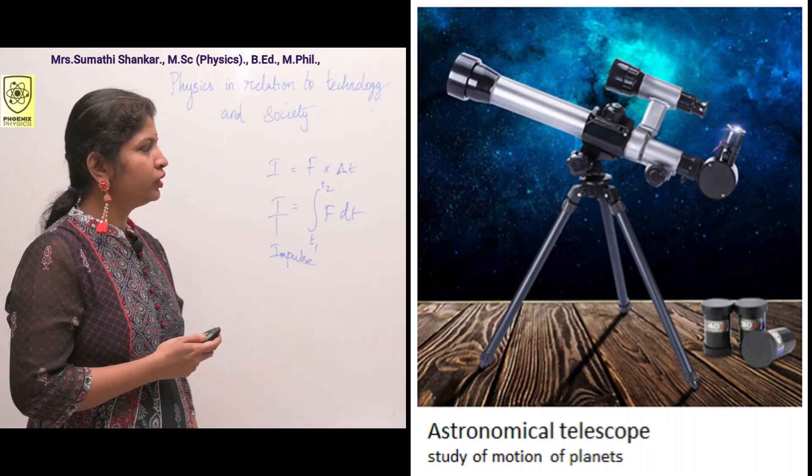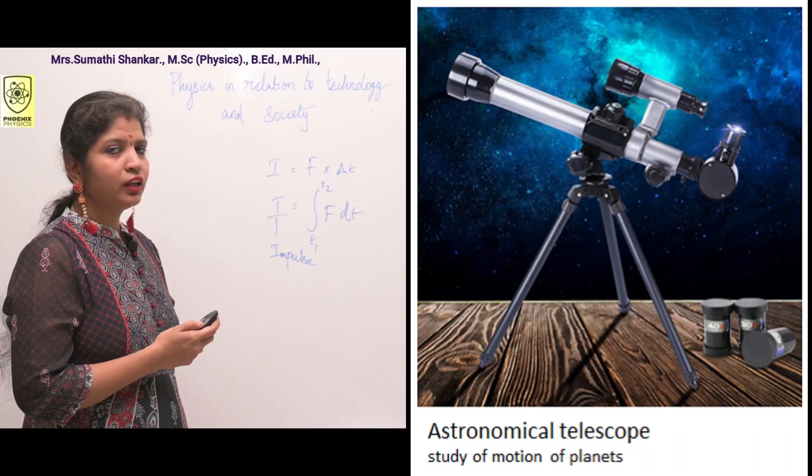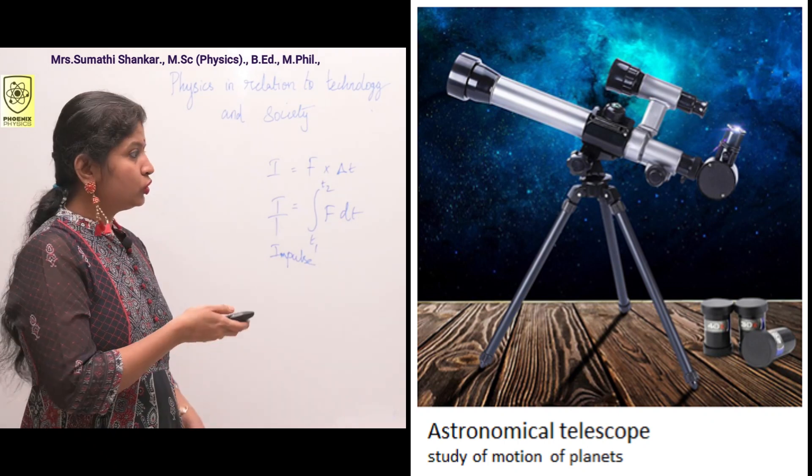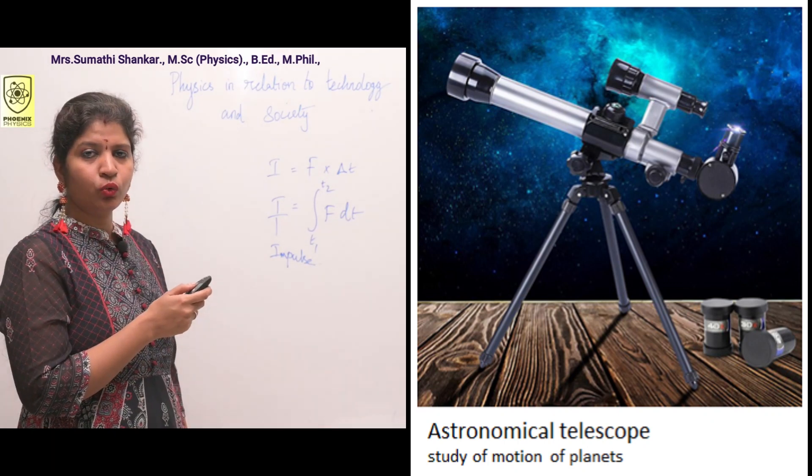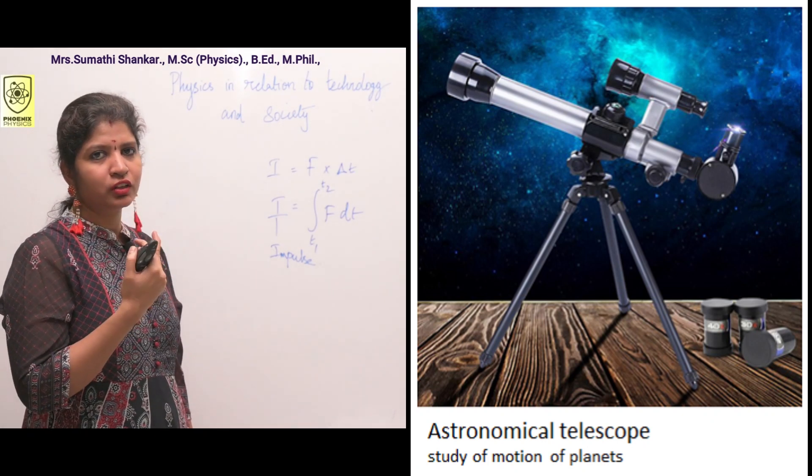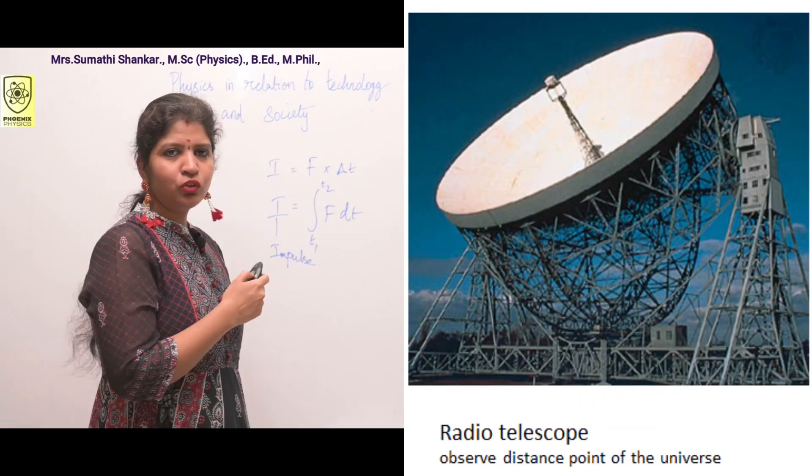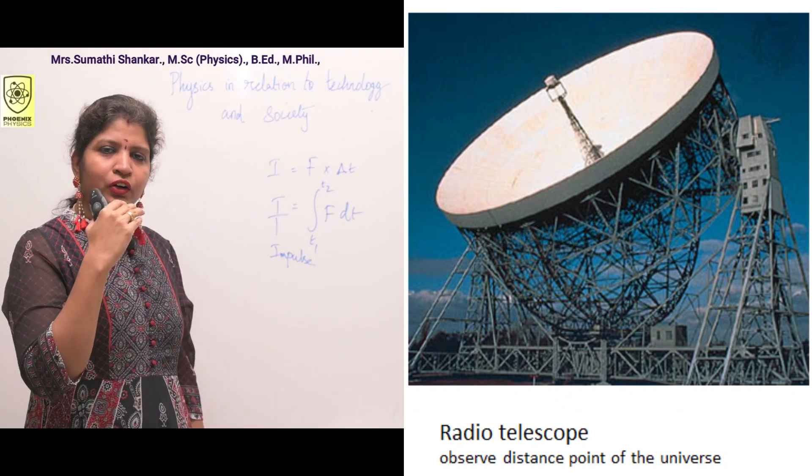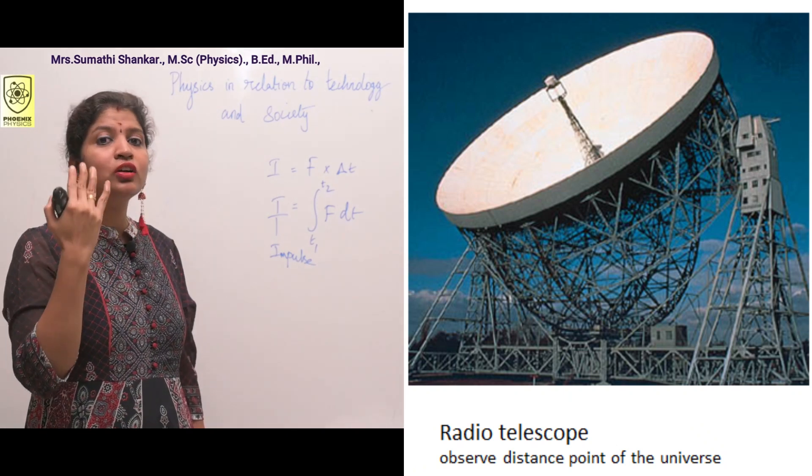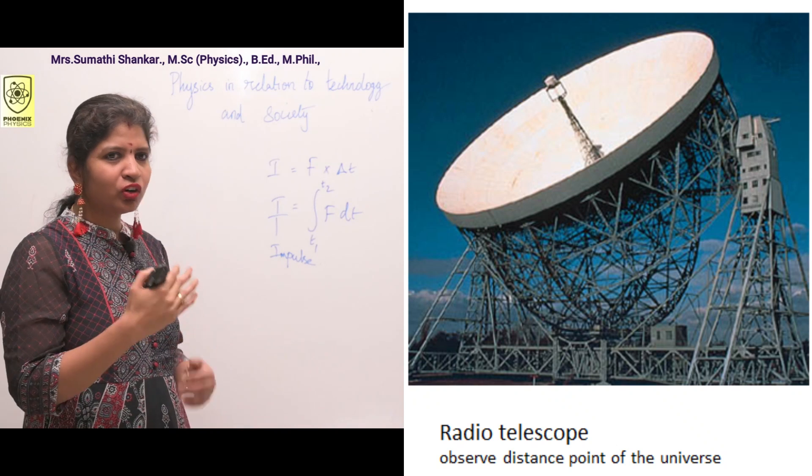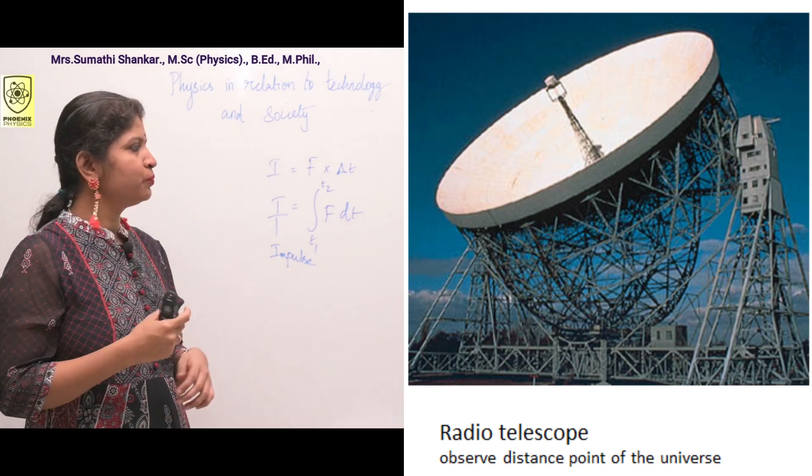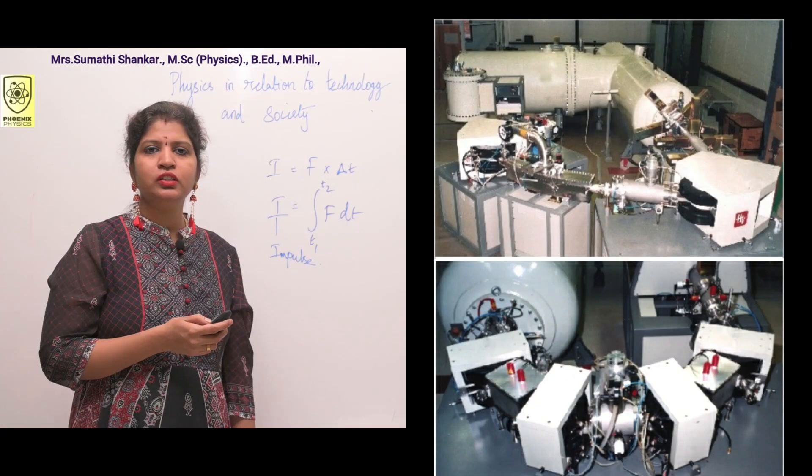Next, physics in relation to astronomy. There are two types of telescopes: astronomical telescope and radio telescope. Astronomical telescope helps us study the motion of planets or heavenly bodies in the sky. Radio telescope is used to detect radio frequency radiation from extraterrestrial sources - we can get radio signals from other galaxies.